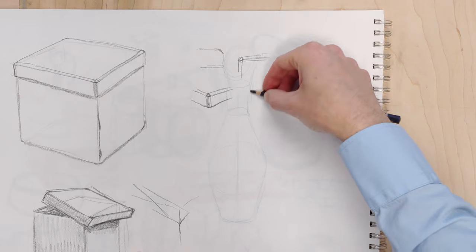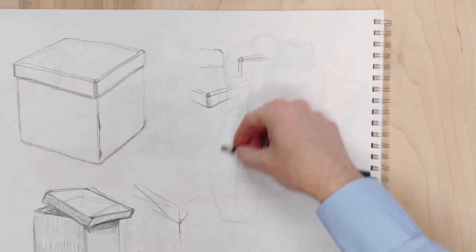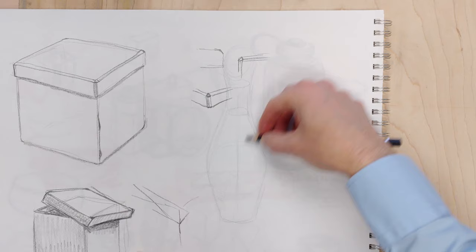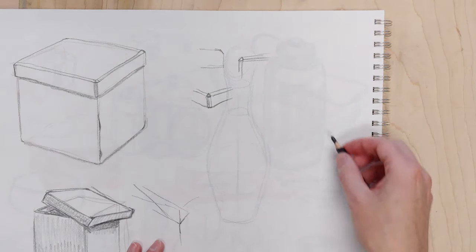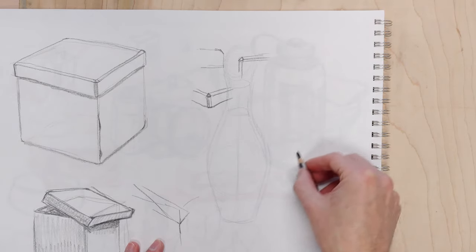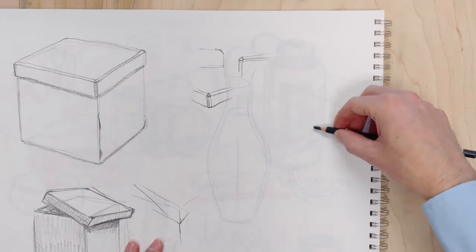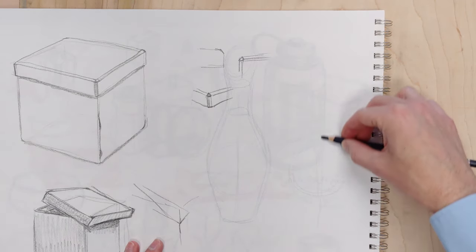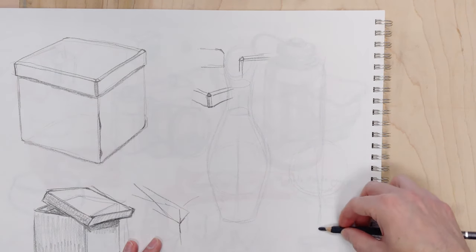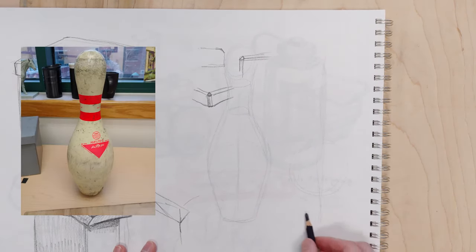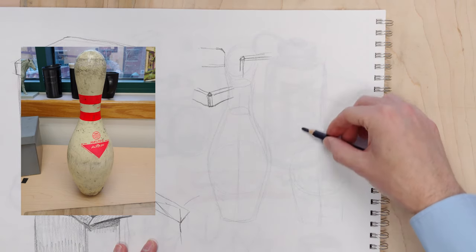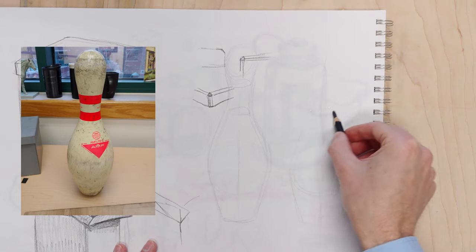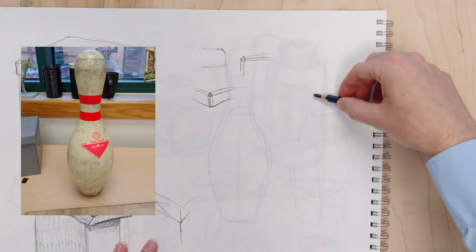One of the things that we talked about doing was, well, how do you take an object and inject more of yourself into it? So what we did was we just drew the same object three times, the same size, but we approached it in three different ways. We're going to take this bowling pin, draw it a couple times, and talk about different approaches you can potentially take with it to make it more interesting for you if you get bored.